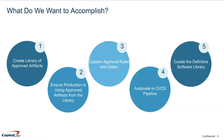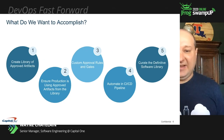Now that we've reviewed the JFrog products that we want to use, let's look at what we want to actually accomplish. First, we want to be able to create a library of approved software artifacts. Next, we want to ensure that production applications are only using those approved artifacts. Third, we want to implement custom rules and custom approval gates that make sense for our enterprise to determine if an artifact is approved for use. Next, we want to automate all of this in the software delivery pipeline. And finally, we want to look at some opportunities to curate our library of approved artifacts to ensure it's fresh, maintained, and kept up to date.